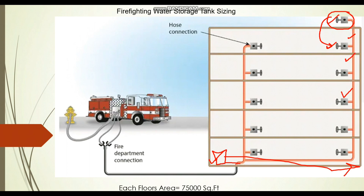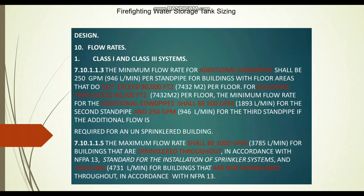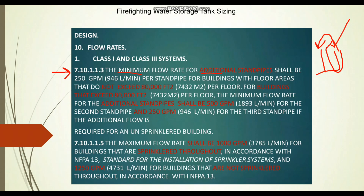Coming to the next riser, we have two conditions to follow. We need to check the floor area. In this project each floor area is 75,000 square feet. As per NFPA 14, for the additional standpipe, we consider 250 GPM if the floor area does not exceed 80,000 square feet. If any floor area exceeds 80,000 square feet, then we must consider 500 GPM for the additional standpipe.